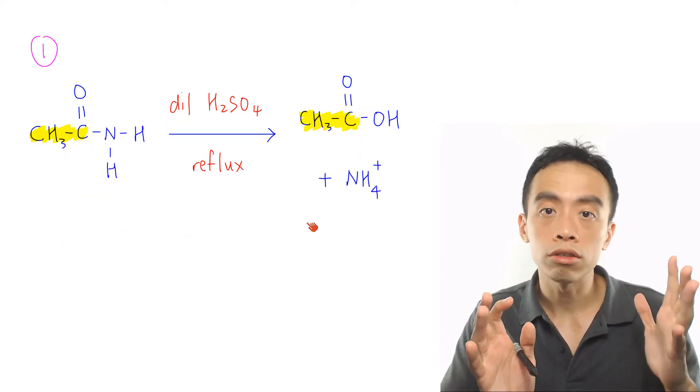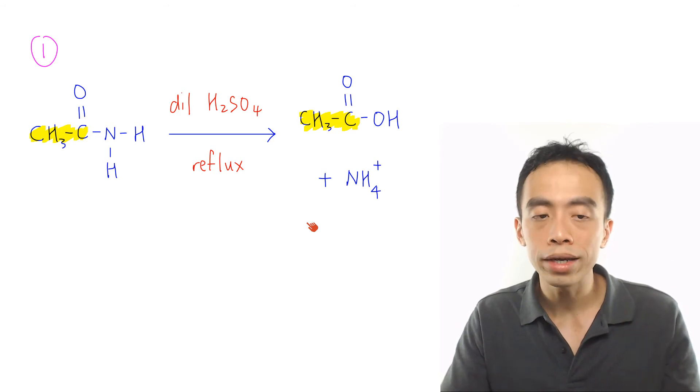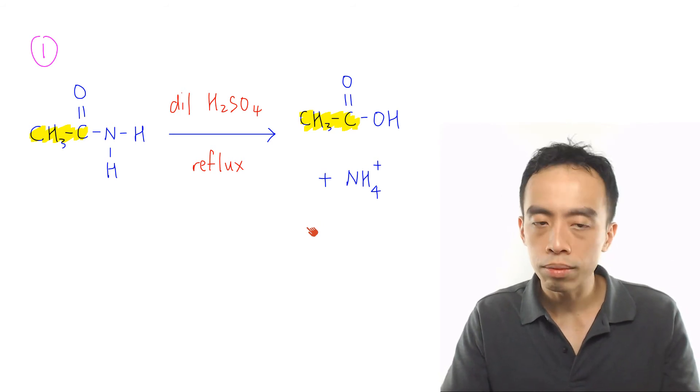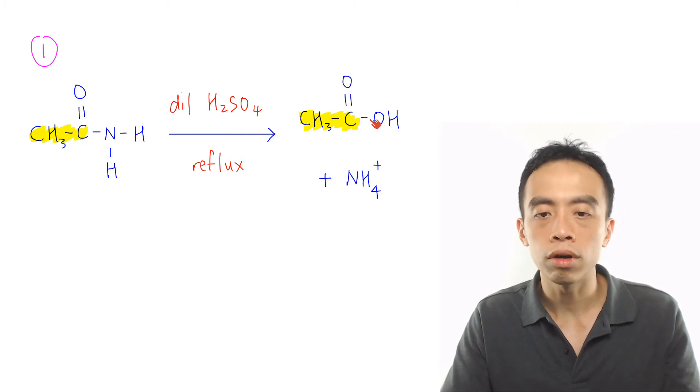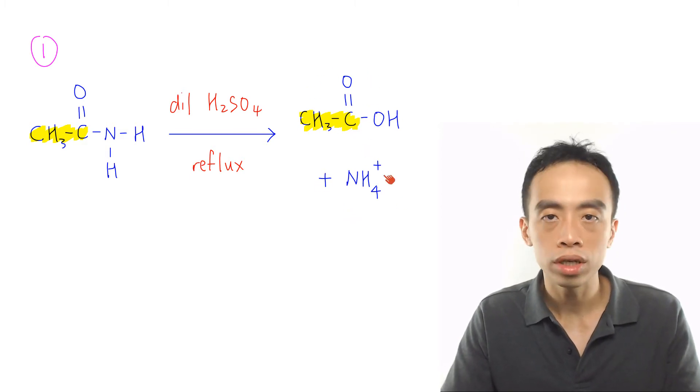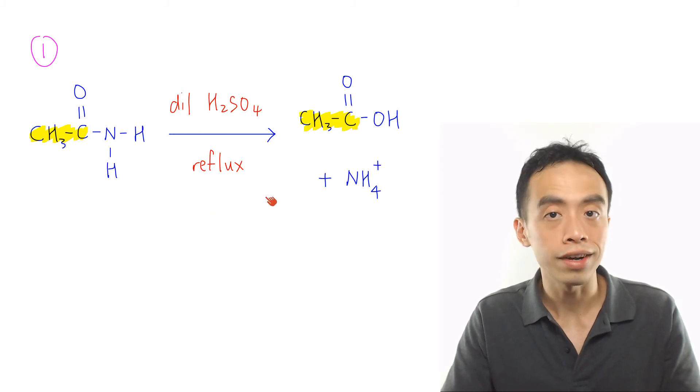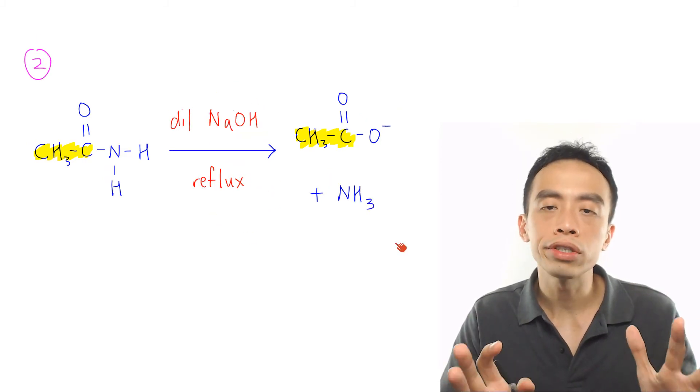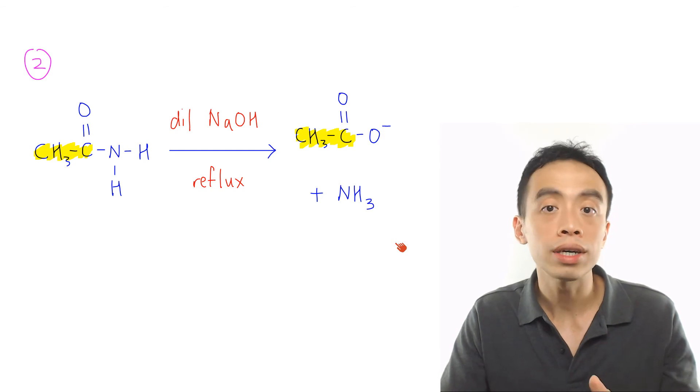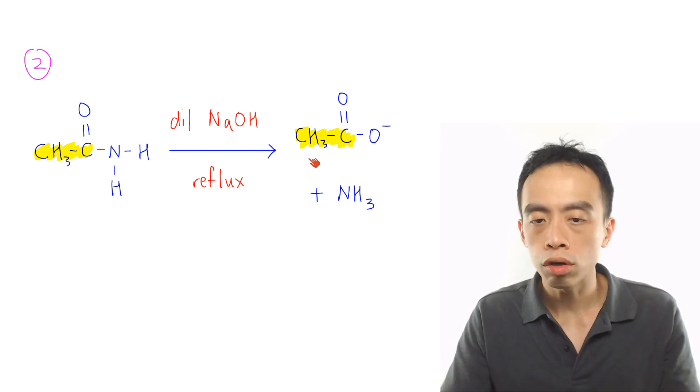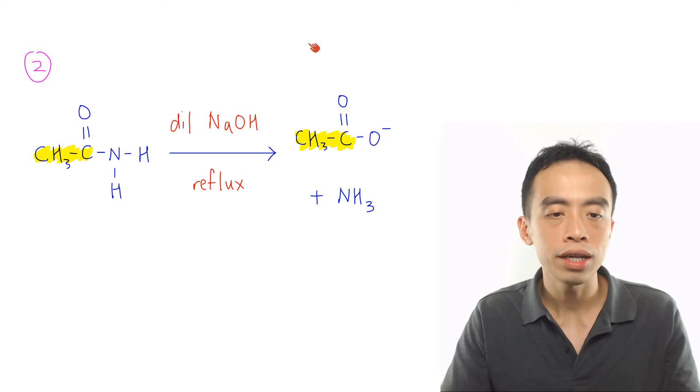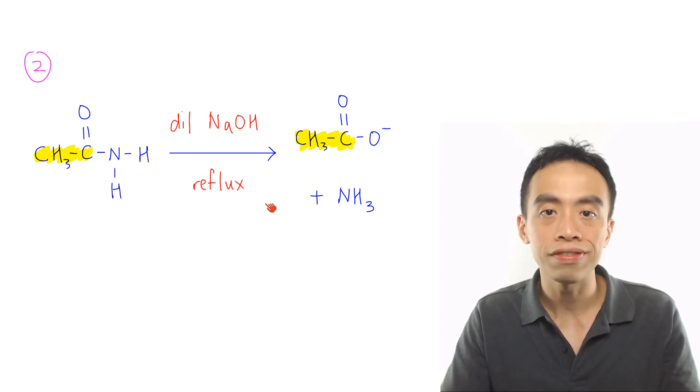Finally, let's talk about the 3 reactions of amides. First reaction of amide is the acidic hydrolysis of amide to form carboxylic acid and ammonium salt. This is done using dilute H2SO4 heat under reflux. Second reaction of amide is the alkaline hydrolysis to give salt of carboxylic acid and ammonia. This is done using dilute NaOH reflux.